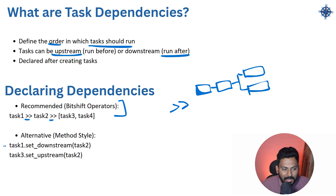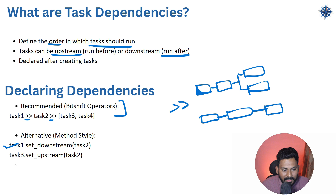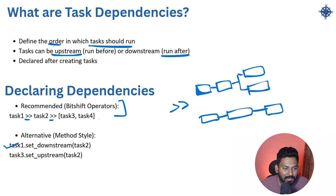The same thing can also be defined using set_upstream and set_downstream. For example, task3.set_upstream([task1, task2]) is equivalent to the >> operator syntax. So task1, task2, task3 — this is just a different way of defining the dependencies. Both approaches achieve the same result.